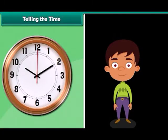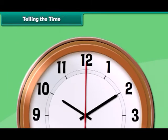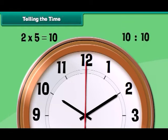Let us now learn to read time. Do you know the table of 5? Let's revise it. The table of 5 is displayed on screen. You can read the time easily if you know the table of number 5. The minute and hour hands are read differently. To know the position of the hour hand, we read the numbers written on the clock face. To know the position of the minute hand, we multiply the number by 5. For example, when the minute hand is at 2, the clock is showing 2 multiplied by 5, that is 10 minutes. This clock is showing the time 10 past 10.